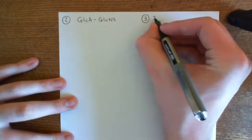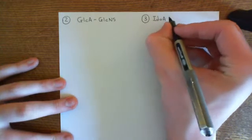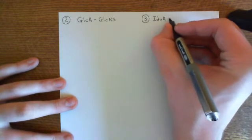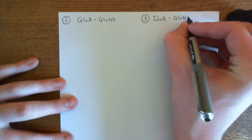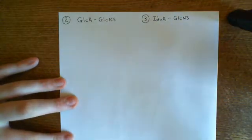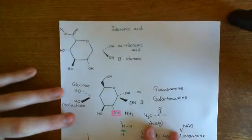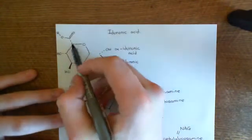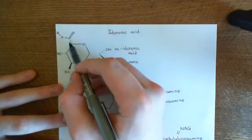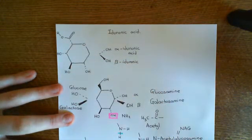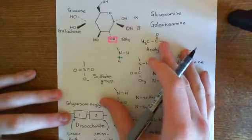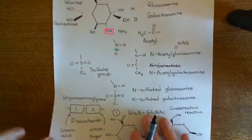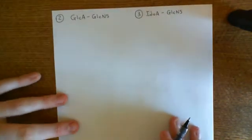The third disaccharide: we change it up. We have IdoA — iduronic acid — in position one, and then bound to the iduronic acid you have another N-sulfated glucosamine. Iduronic acid is very similar to glucuronic acid, except that the carboxylic acid group off the fifth carbon goes into the page rather than coming out of the page at us. So you have iduronic acid as your uronic acid sugar, and then N-sulfated glucosamine as your amino sugar.